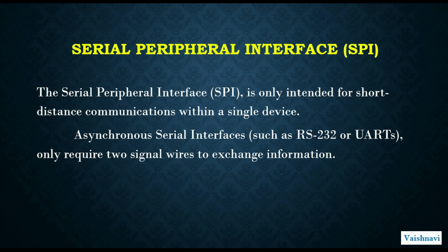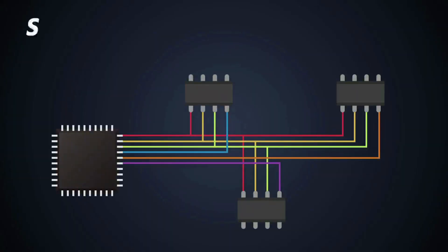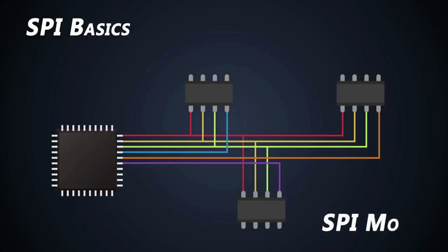What is the Serial Peripheral Interface (SPI)? The SPI is only intended for short distance communications within a single device. A synchronous serial interface such as RS232 UARTs only requires two signal wires to exchange information. I will explain here the basics of SPI communications and different modes of SPI communication.